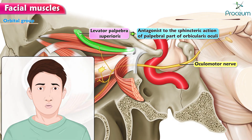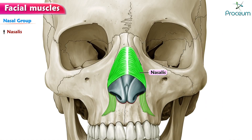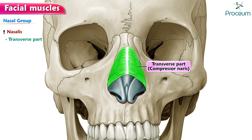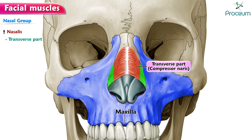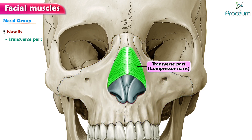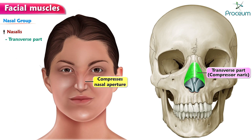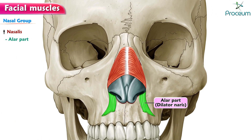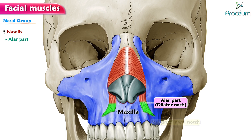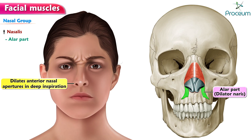Levator palpebrae superioris is an antagonist to the sphincteric action of the palpebral part of orbicularis oculi; it elevates the upper eyelid. Nasal group. Nasalis — transverse part, or compressor naris: arises from the maxilla just lateral to the nose, crosses the bridge of the nose where it becomes continuous with its counterpart on the opposite side. Insertion: aponeurosis across the dorsum of the nose with muscle fibers from the other side. Action: compresses the nasal aperture. Alar part, or dilator naris: arises from the maxilla at the margin of the nasal notch and is inserted into the lateral part of the ala of the nose. It dilates the anterior nasal aperture, as in deep inspiration, and also expresses anger.